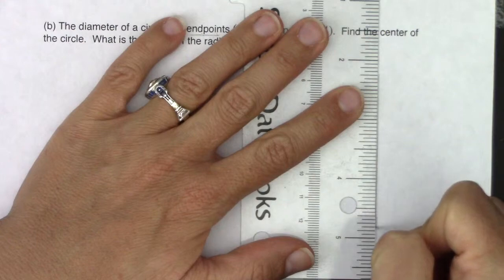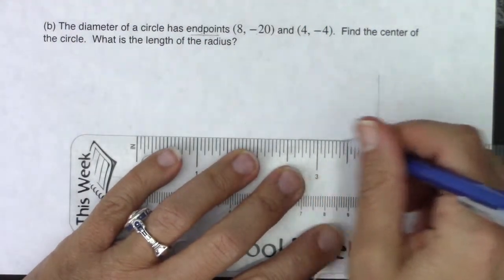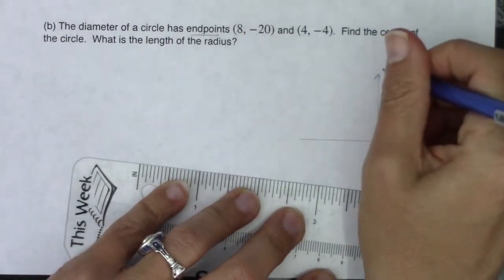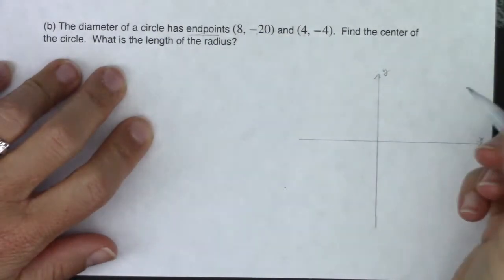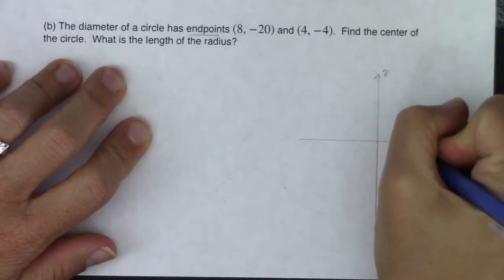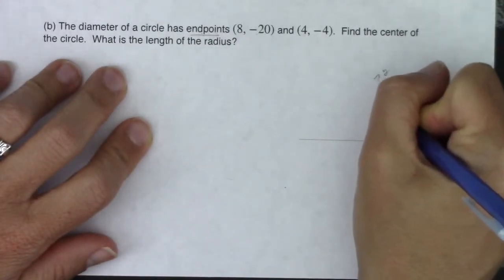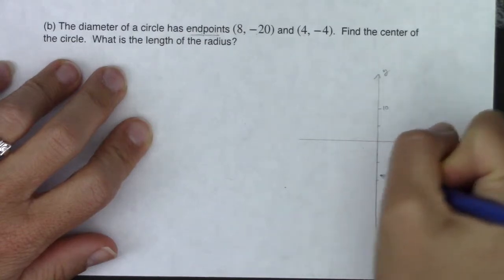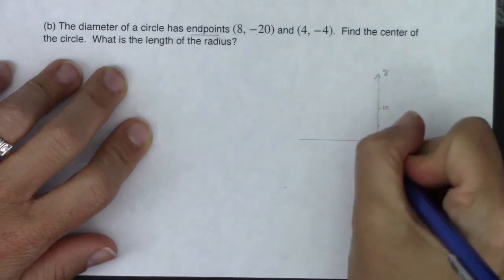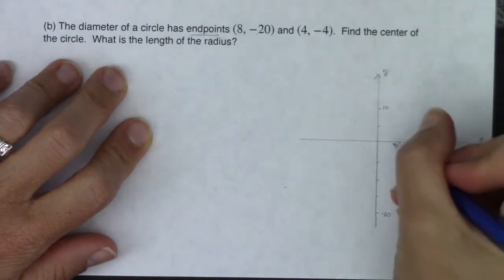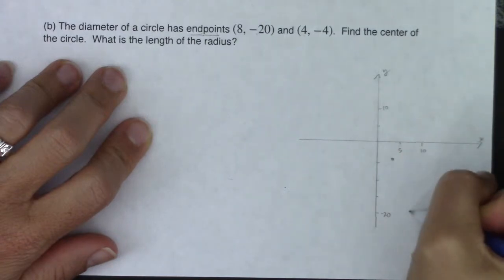Let's get some gut feelings. So I have 8 negative 20 and 4 negative 4. These are large numbers so I'm going to go by 5's. I'm going to say this is 5, 10. And we're going to go negative 5, negative 10, negative 15, negative 20 here. So we've got 4, negative 4. And then I've got 8, negative 20.